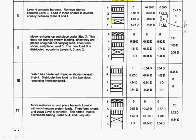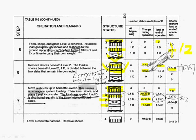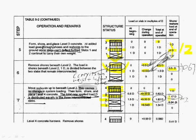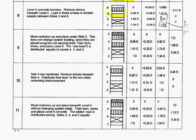We have actually taken the shoring — I think it's shoring, right? Yes, it's shoring from the third floor. So what's going to happen: we allow the third floor slab and the fourth floor slab to deflect, which means previously the load on the third floor of shoring, which is 1.170D, is now going to be distributed evenly on the third floor and the fourth floor of slab, as you can see over here.